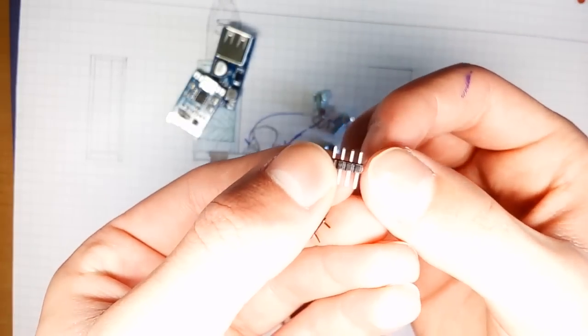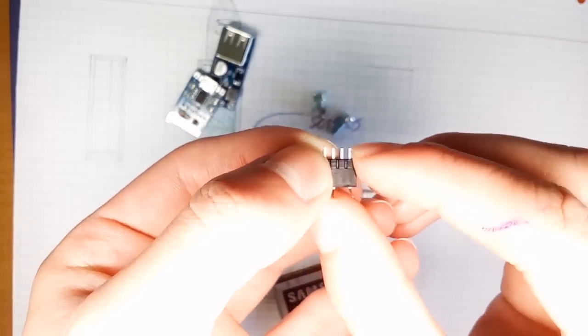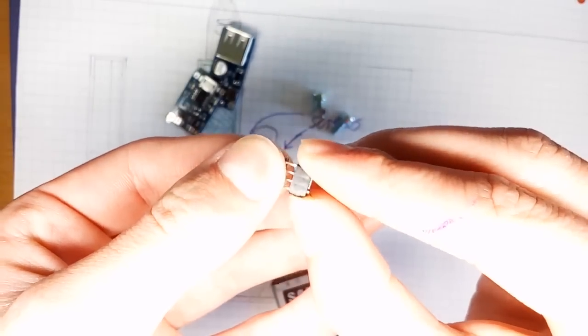This way I can connect the battery connector two ways. One where plus is on the right and minus is on the left side, and one where it is the other way around.